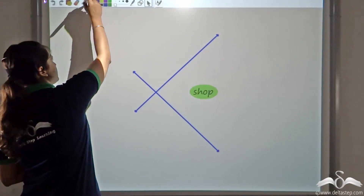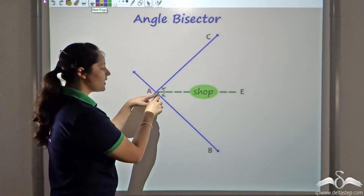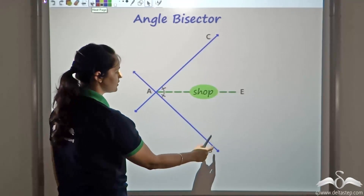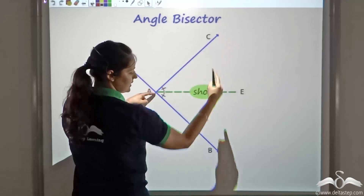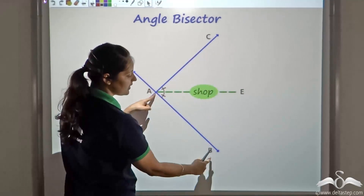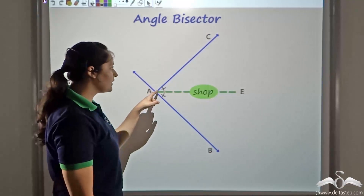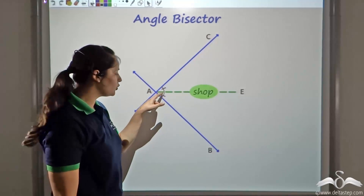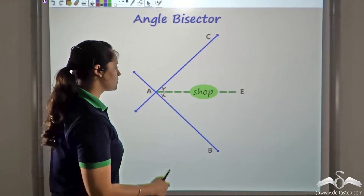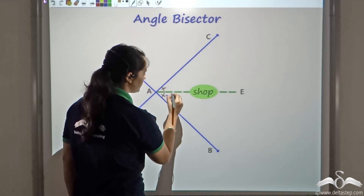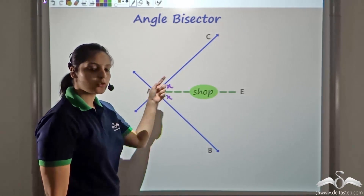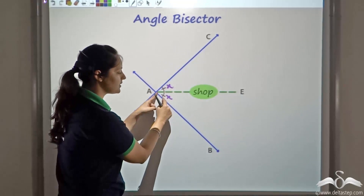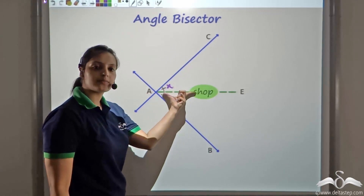For that, let us recall the angle bisector. An angle bisector is a line that bisects the angle formed by two lines. So let us say these two lines are AC and AB, and the angle formed is angle BAC. The line AE bisects this angle BAC into two equal angles, each X, if the total angle was 2X degrees. So AE becomes the angle bisector.